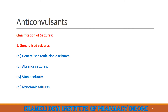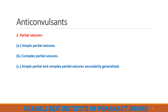Generalized seizures are further divided into four subcategories: first is Generalized tonic-clonic seizure, second is Absence seizure, third is Atonic seizure, and fourth is Myoclonic seizure. Partial seizures are further divided into three categories: Simple Partial seizure, Complex Partial seizure, and Simple Partial and Complex Partial seizure secondarily generalized.